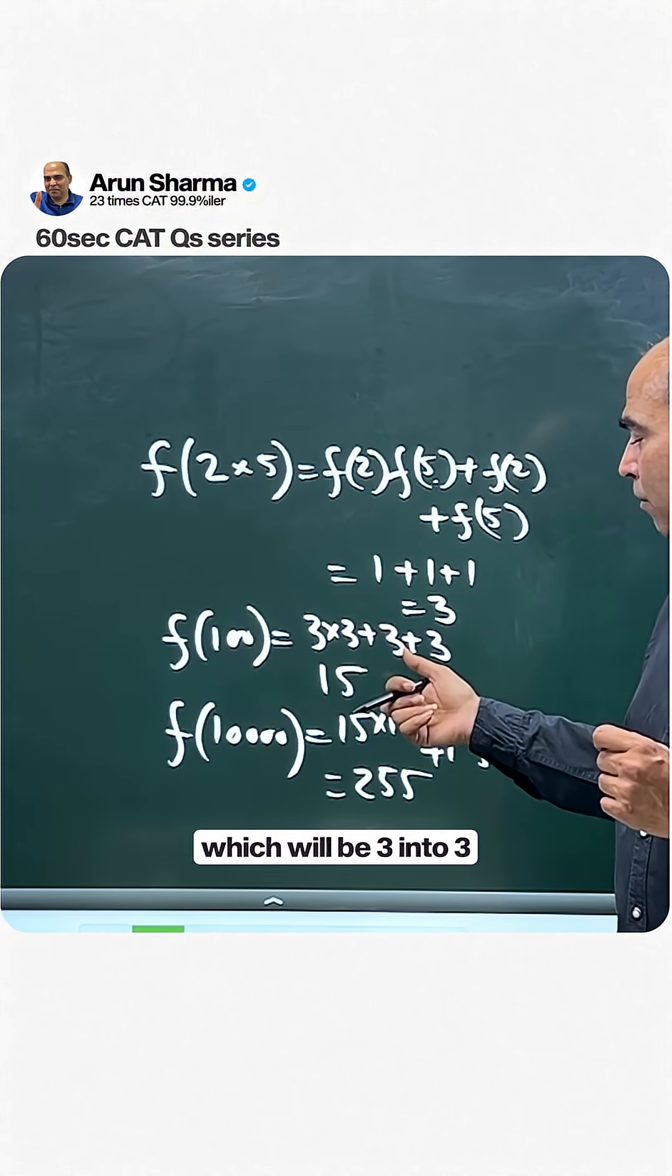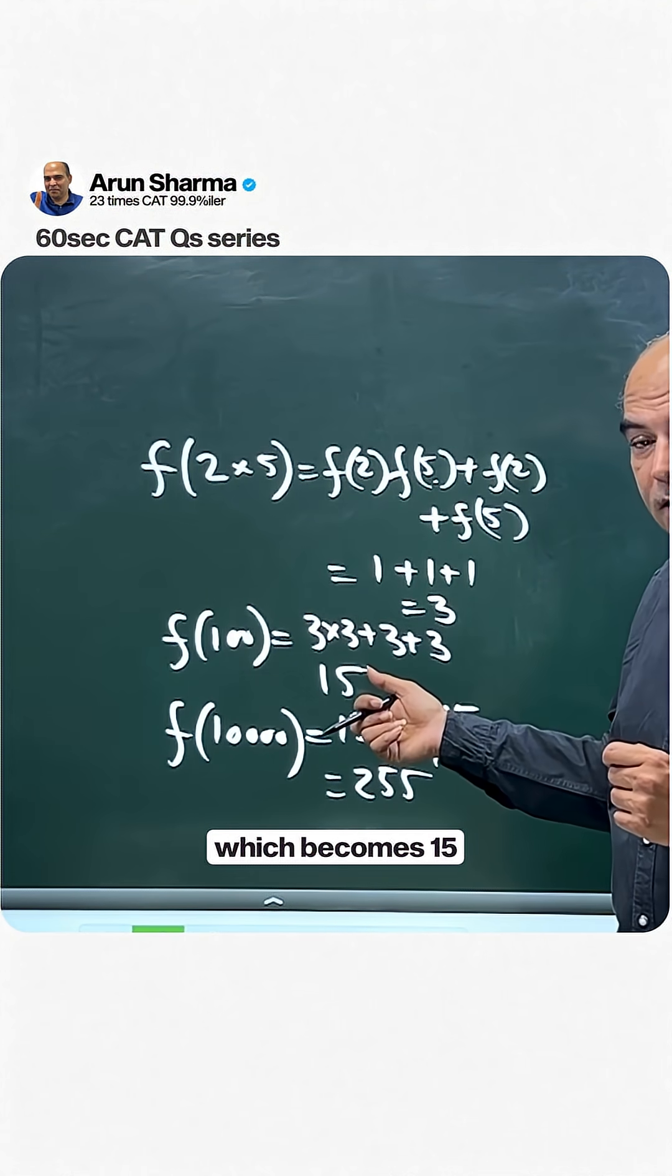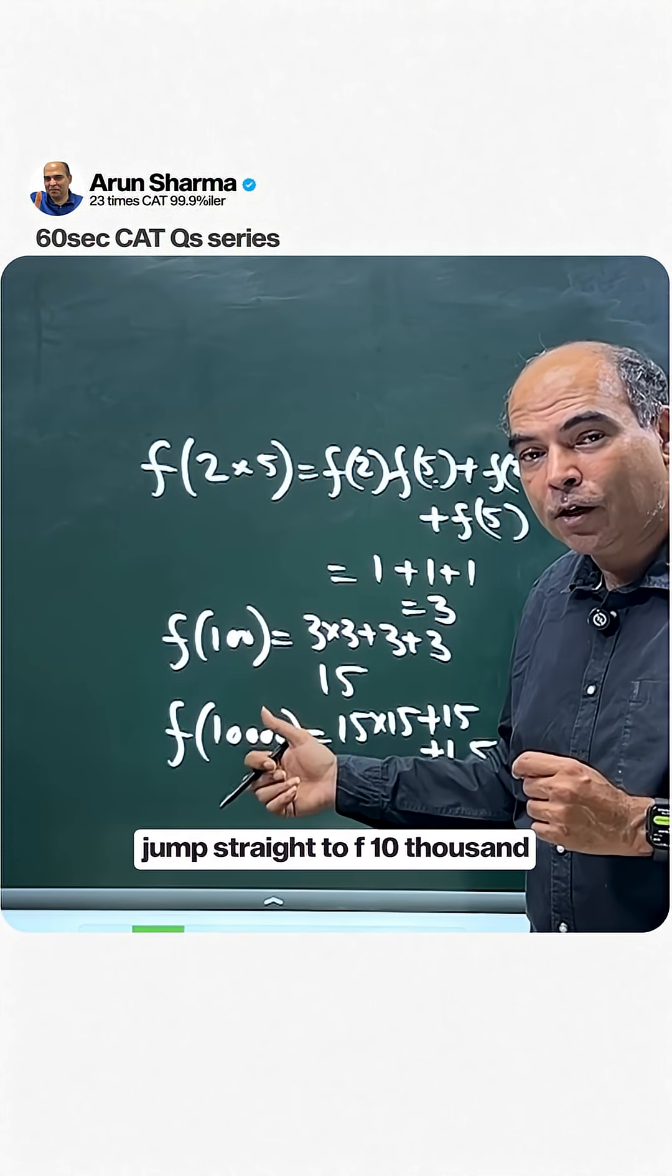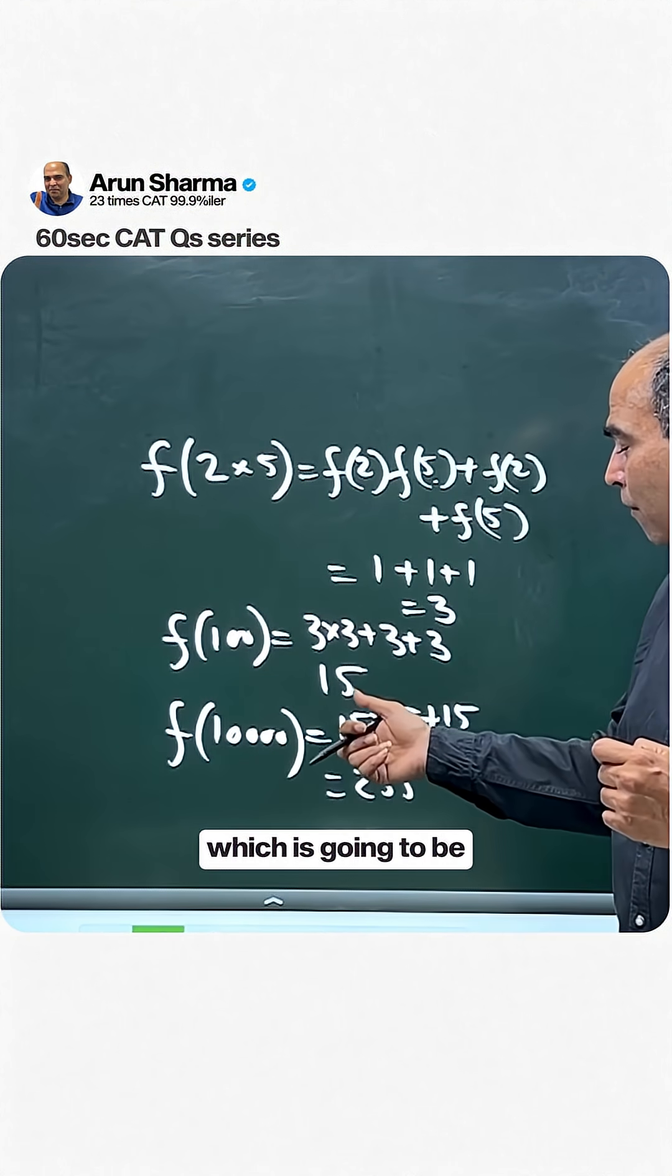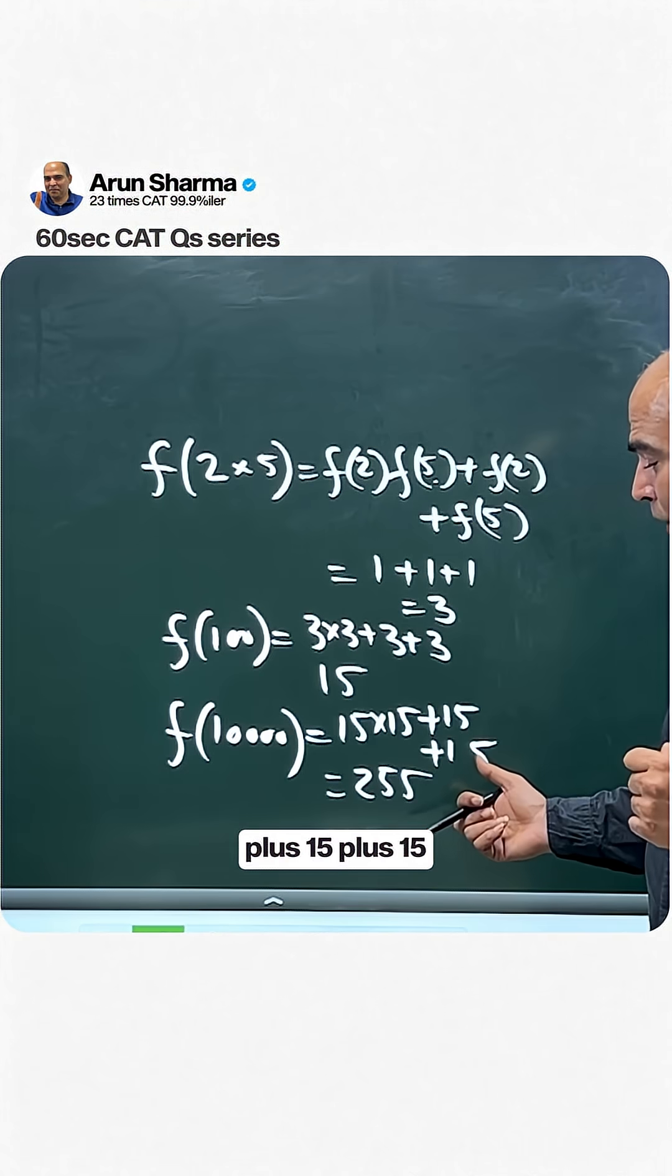From f(10), calculate f(100) using f(10,10): f(100) = 3 × 3 + 3 + 3 = 15. Then jump to f(10000) using f(100,100): f(10000) = 15 × 15 + 15 + 15 = 255.